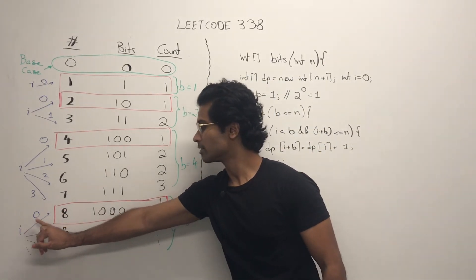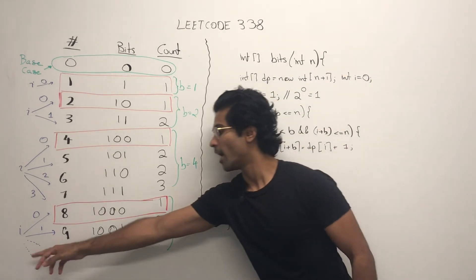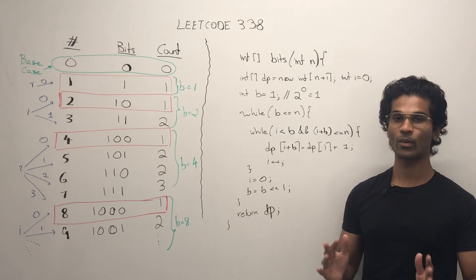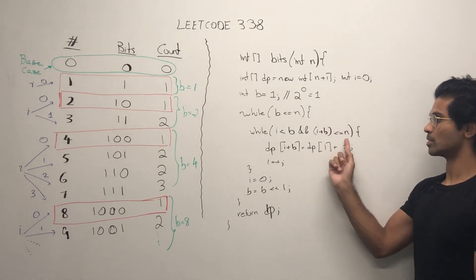What do I mean by that? Well, i 0 plus 8 is going to be 8. i 1 plus 8 is going to be 9. So we never want to go out of bounds using our N. So that's where this comes in.